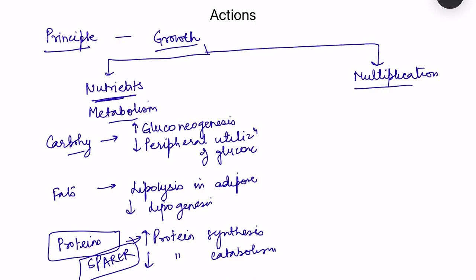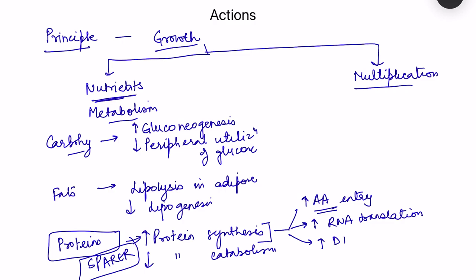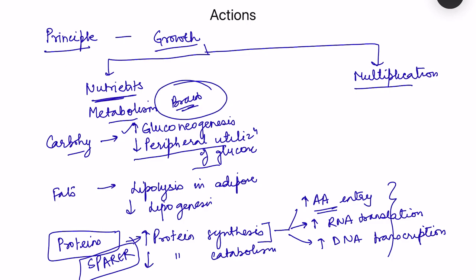Growth hormone increases protein synthesis by increasing amino acid entry into cells, increasing RNA translation (conversion of RNA to proteins), and increasing DNA transcription (formation of RNA from DNA). The decreased peripheral glucose utilization ensures that glucose is preserved for neurons. Meanwhile, lipolysis allows fats to be used as fuel instead.